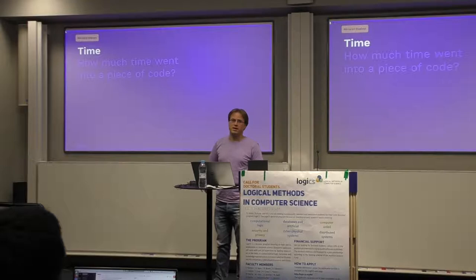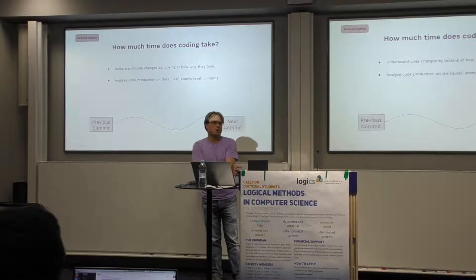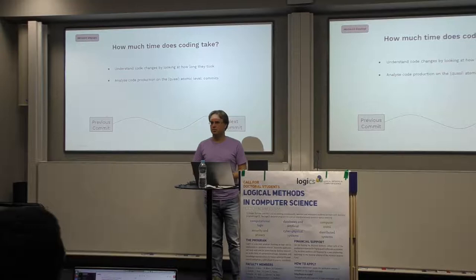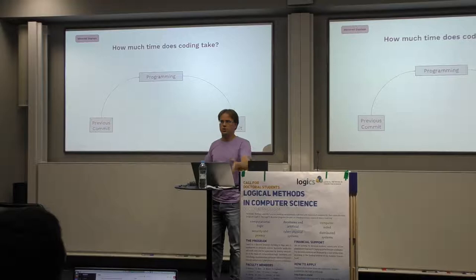If you want to understand more about code production, the time dimension is the most basic thing you might want to tackle. The question is pretty simple: you want to analyze code change at the most reasonable atomic level, which is probably that of a single commit — a change of code checked into some version control system.